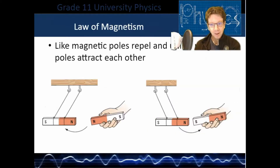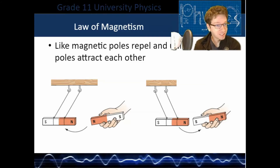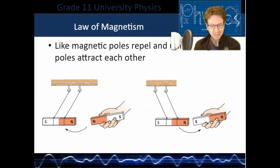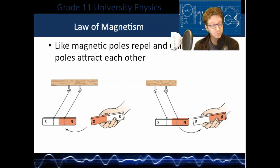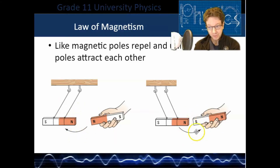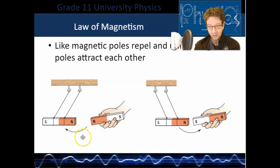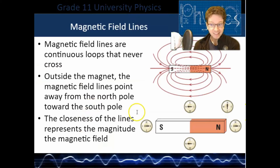First, magnetism. Similar to charges — where opposite charges attract and like charges repel — magnetism is the same thing, but instead of positive and negative we have north and south. They follow the same rules: two north poles will repel, and opposite poles like north and south will attract. The same would be true for two south poles — they would repel. So those are some rules for magnetism.